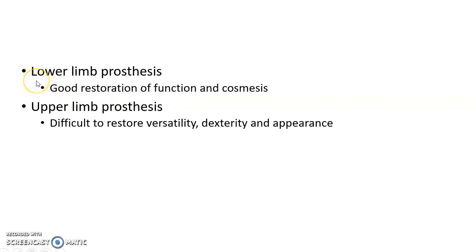Prosthesis can be divided into lower limb prosthesis and upper limb prosthesis. In case of lower limb prosthesis, they provide good restoration of function and good cosmesis. In case of upper limb prosthesis, it is difficult to restore versatility, dexterity and appearance of a normal upper limb.